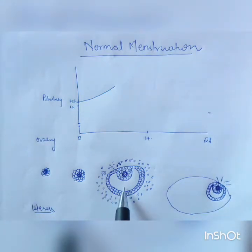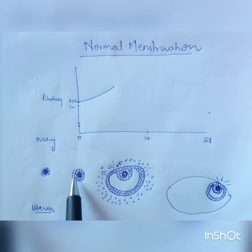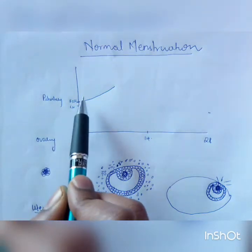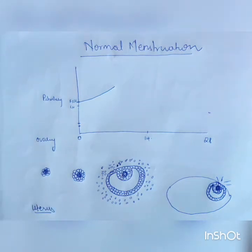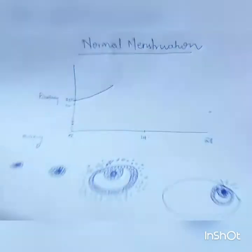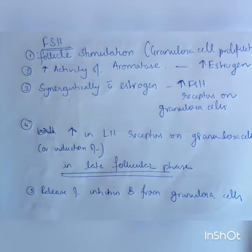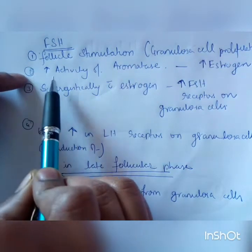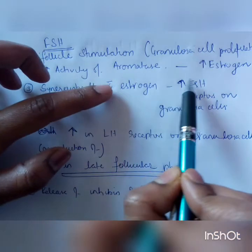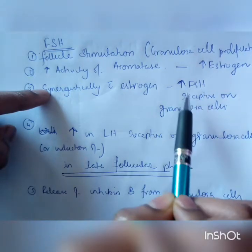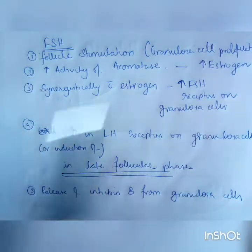The second function of FSH is that it causes release of estrogen. These granulosa cells form estrogen from androgens in the presence of FSH. FSH activates an enzyme called aromatase, which converts androgens to estrogen. To summarize: first function is follicle stimulation; second function is to increase estrogen production. FSH also increases its own receptors on granulosa cells.